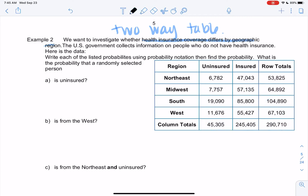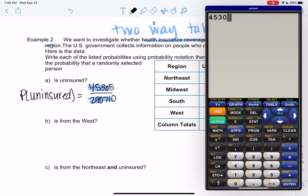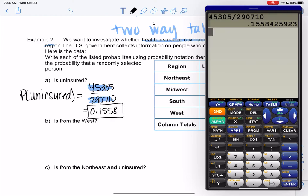So we want to do the probability that someone is uninsured. So I'm going to go to the table. It looks like 45,305 are uninsured out of the total, 290,710. So we'll go ahead and take that, divide, write ugly numbers. That's fine. We get 0.1558. So about 15% chance, but 0.1558. We like decimal form.